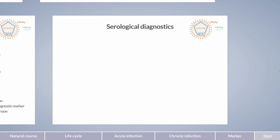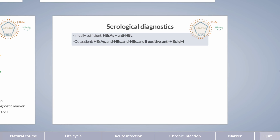How is hepatitis B screening performed in practice? Diagnostics can be performed in stages to avoid directly detecting all antigens and antibodies. For initial screening, determination of HBs antigen and anti-HBc is usually sufficient, and further diagnostic testing can be planned based on the results. In an environment where repeated blood collection is not possible, such as in the physician's office, the following may be requested: HBs antigen, anti-HBs antibody, and anti-HBc antibody. If anti-HBc antibodies are detectable, anti-HBc IgM is additionally measured.